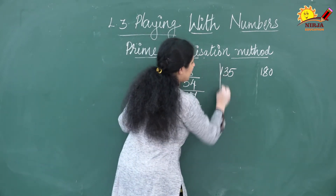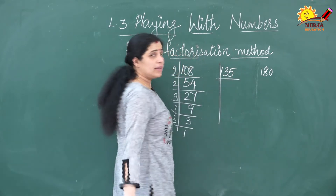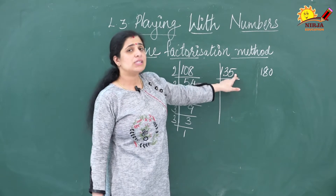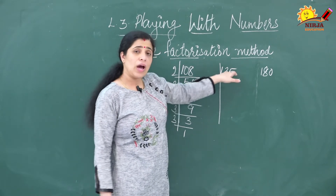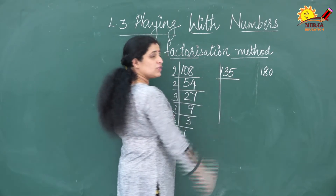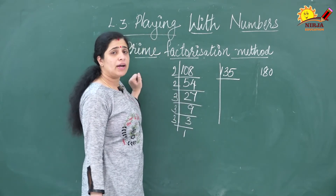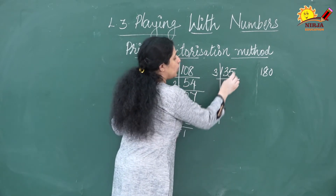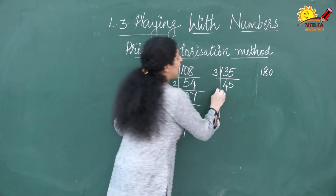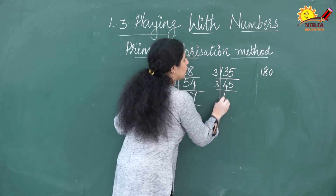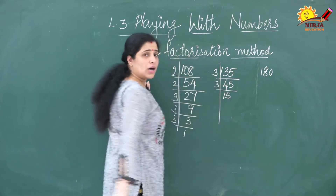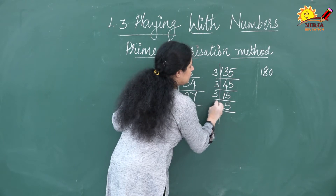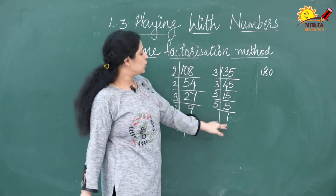Now we do the prime factorization of 135. This number is not divisible by 2. To check divisibility by 3, add the digits: 1+3+5 = 9, so it is divisible by 3. Dividing by 3 gives 45, again by 3 gives 15, again by 3 gives 5, and again by 5 gives 1. So the prime factorization of 135 is done.